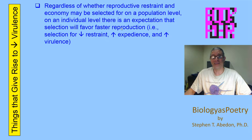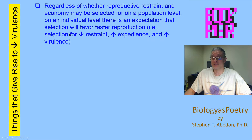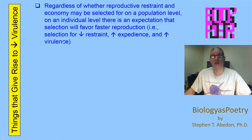Regardless of what the broader ecology tells us, when we have an individual, and particularly if there are no trade-offs associated with it, if it can replicate faster than its competitors, then it should be more successful. So you have an expectation, at least in simplistic or short-term senses, that selection will be for a reduction in restraint, an increase in rates of reproduction, an increase in expedience, and also a resulting increase in virulence. If faster reproduction results in greater virulence, you have an expectation that selection acting on individuals within populations will be for those individuals that display a greater level of virulence.